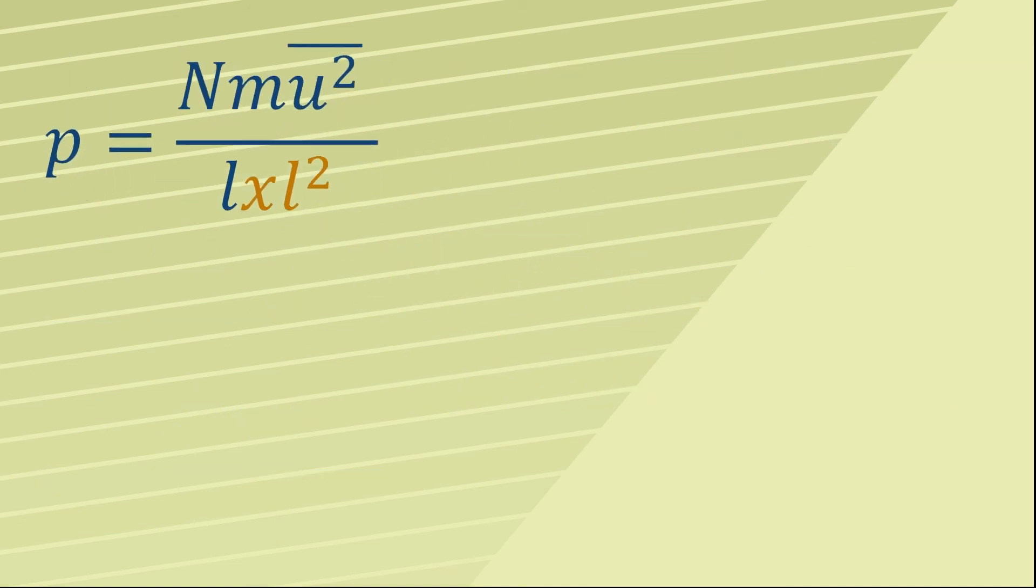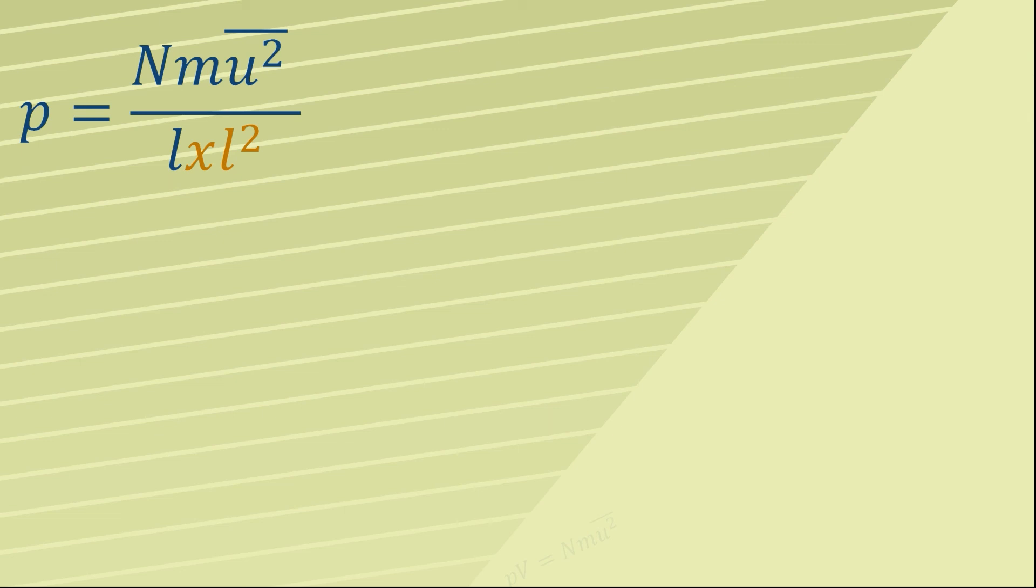Therefore we can say that pressure equals n m mean square speed divided by L cubed, and of course L cubed is equal to volume. Therefore we have volume on the bottom.